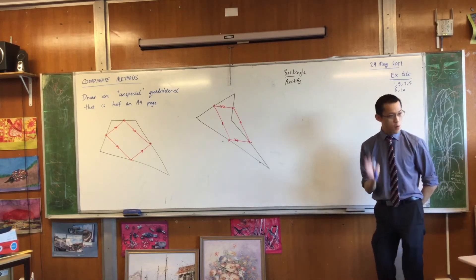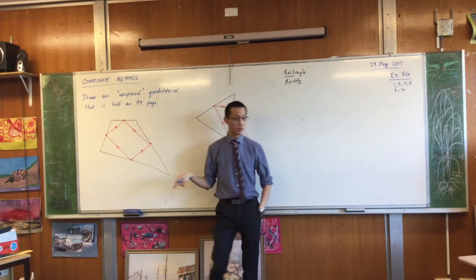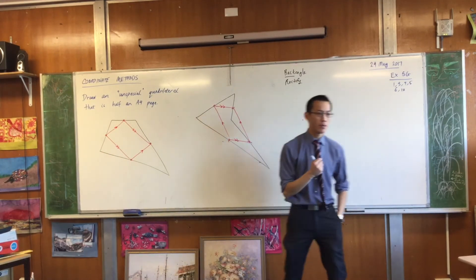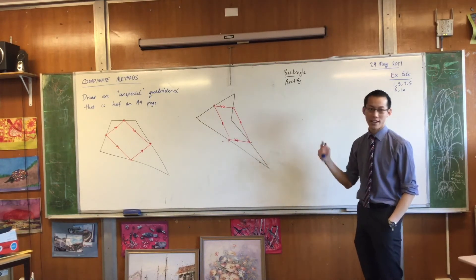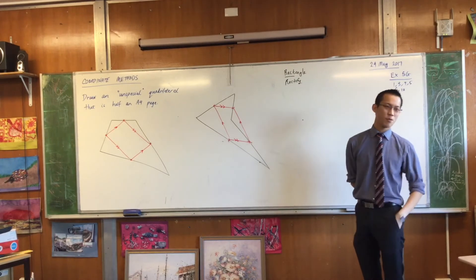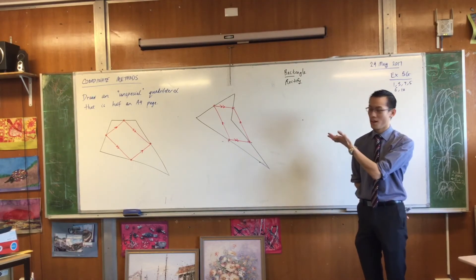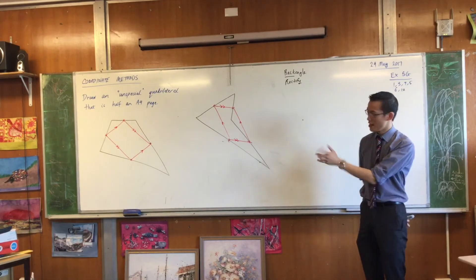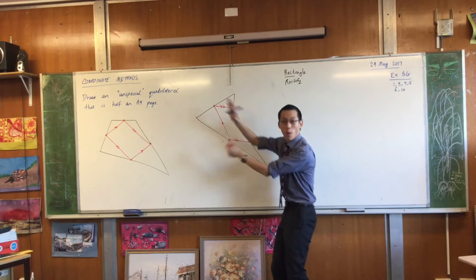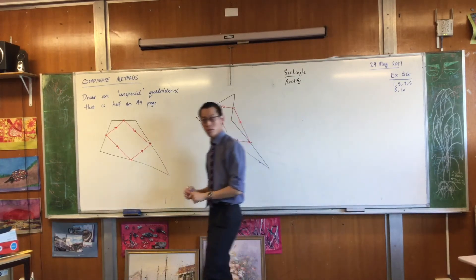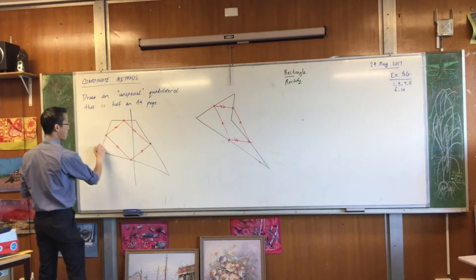Now, there's a variety of ways to prove that if you have an arbitrary quadrilateral, if you join the midpoints of the side, then you must always, without exception, create a parallelogram. But being that we're in the topic of coordinate geometry, I want to show you how we can do this using a coordinate system. So I ask you to draw this half an A4 page. What I want you to do is superimpose on top of it some coordinate axes. Can you do that for me? Just put it right smack bang in the middle.